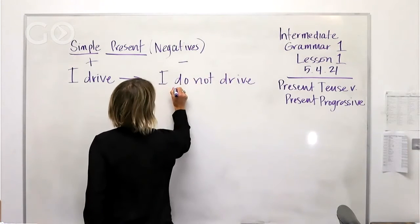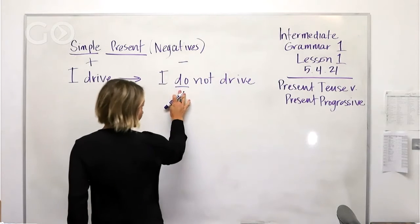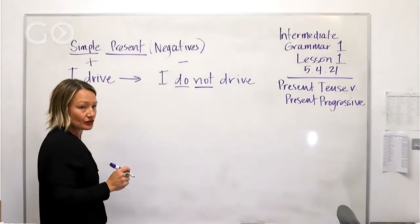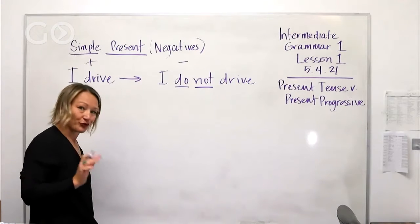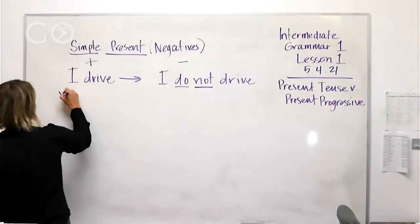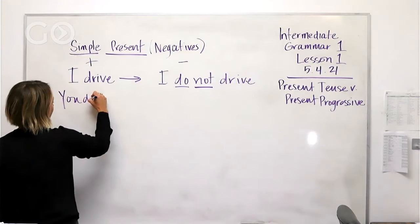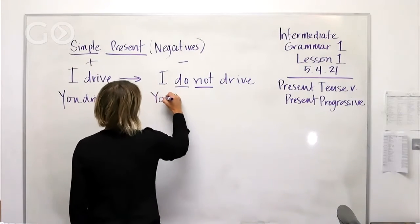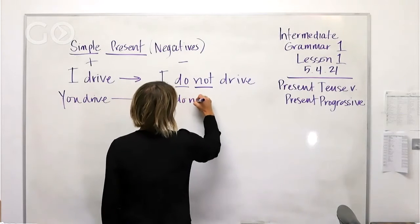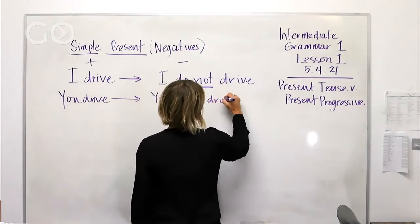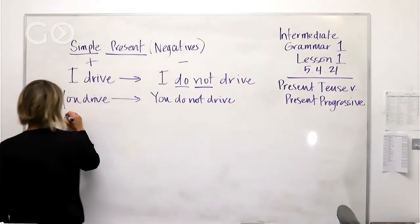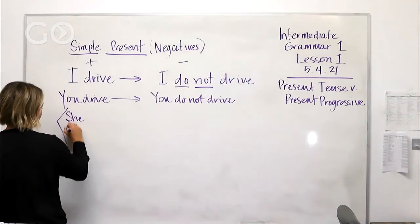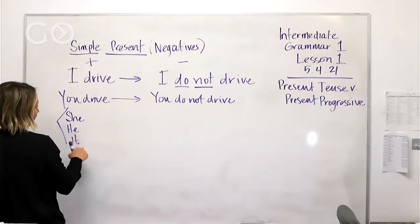So we're going to add in this 'do' auxiliary and the negative aspect of that. That's why I say it's really important to practice this. Now, you drive - you drive goes to the same thing - you do not drive. Let's do 'she.' Remember there's always three in this category here: she, he, it.